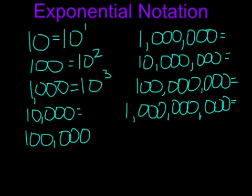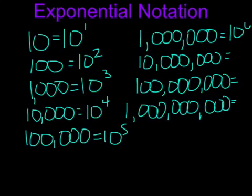The number of zeros that a power of 10 has represents the exponent that you add to the 10. So, 10,000 is 10 to the power of 4. 100,000 is 10 to the power of 5. 1,000,000 is 10 to the power of 6. 10,000,000 is 10 to the power of 7. 100,000,000 is 10 to the power of 8. And 1,000,000 is 10 to the power of 9.